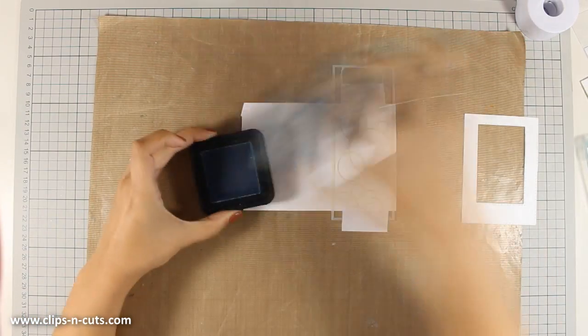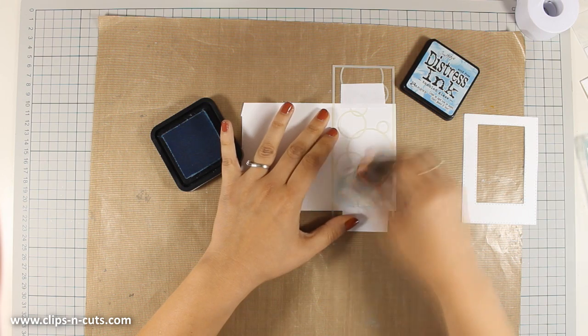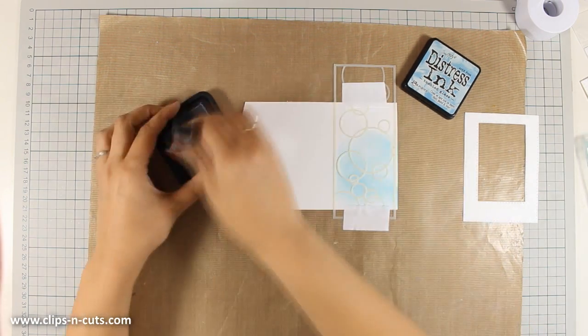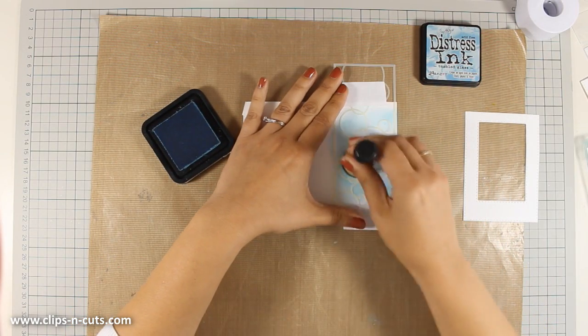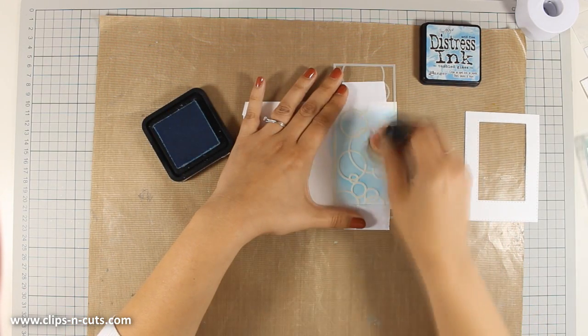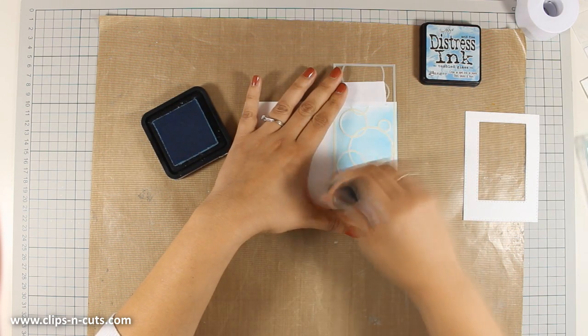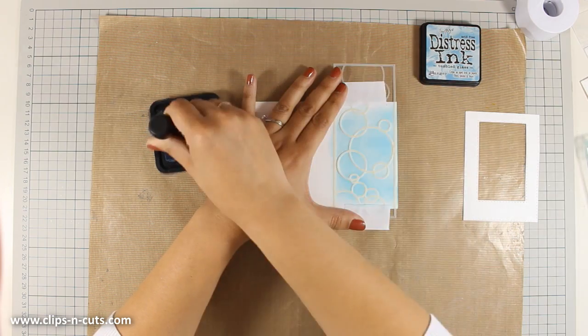So first of all I am going to bring in tumbled glass. I am going all over the stencil with my blending tool and I am not pressing too hard because I don't want to move the stencil. So although it looks like I am moving very fast, I am actually being very gentle.